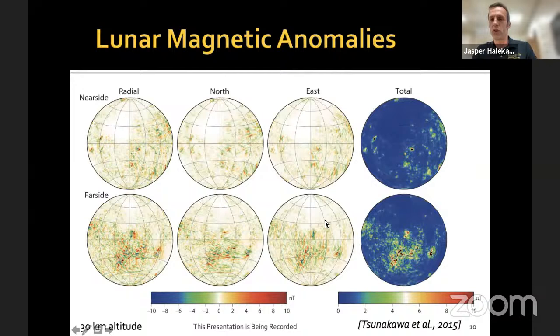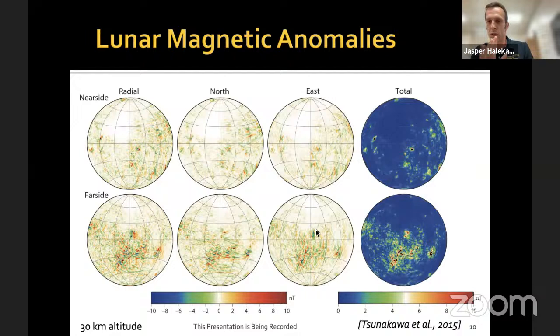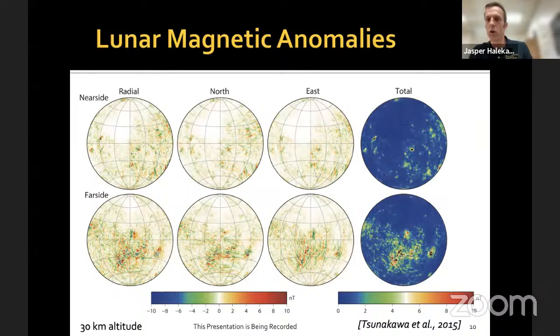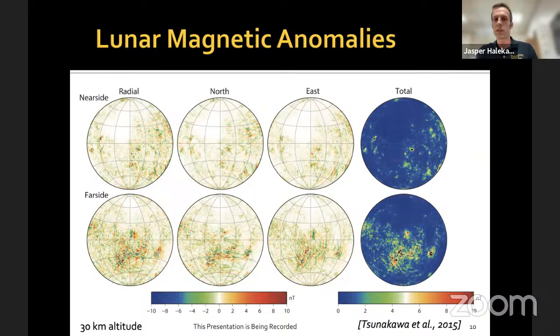These anomalies are very small compared to plasma scales. The ion inertial length in the solar wind is about 100 kilometers, so the lateral scales of these features are comparable to the ion inertial length. But the altitude scale is even smaller—at 30 kilometers altitude the fields are already very weak, and at 100 kilometers altitude you'd have barely a nanotesla signal. If you'd shown me these magnetic field maps 15 or 20 years ago, I would have said there's no possible way these can do anything to the solar wind, because the gyroradius is 1,000 km and the ion inertial length is 100 km—the solar wind should just blast right through. I was wrong, because these things do a lot to the solar wind.